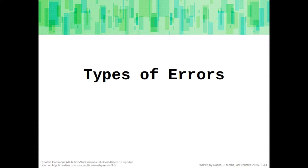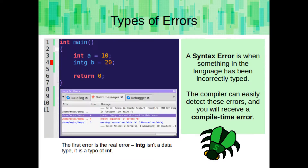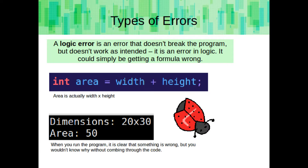Now let's go over types of errors before we start programming. A syntax error is when something in the language has been incorrectly typed. The compiler can easily detect these, and you will receive a compile time error. In this example, I've misspelled int and it's giving me an error saying it doesn't know what an 'intg' type is. A runtime error is not grammatically incorrect, but something breaks or doesn't work as intended while the program is running. A logic error is an error that doesn't break the program but doesn't work as intended — it is an error in logic.